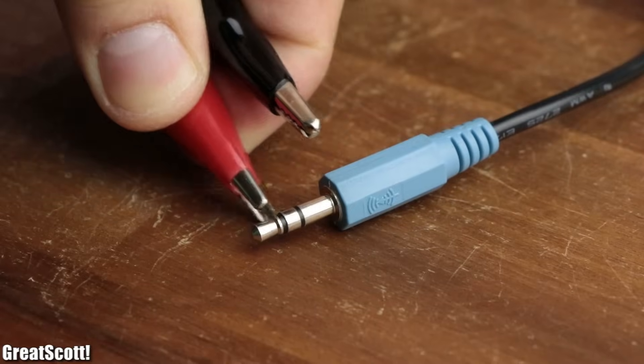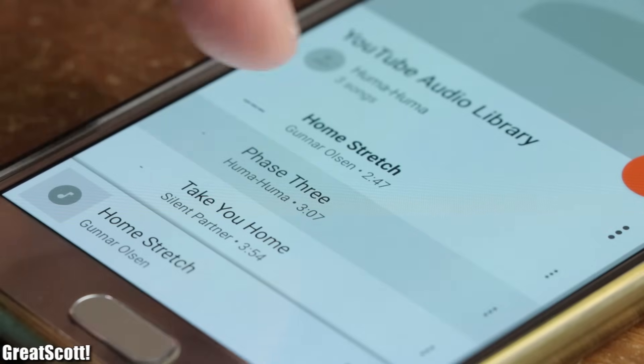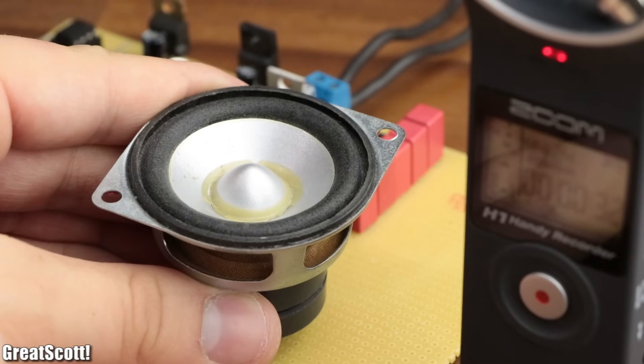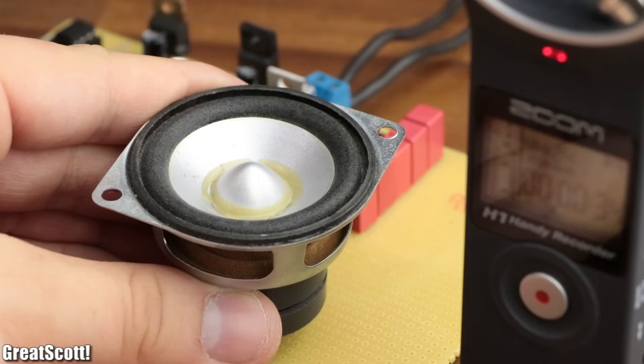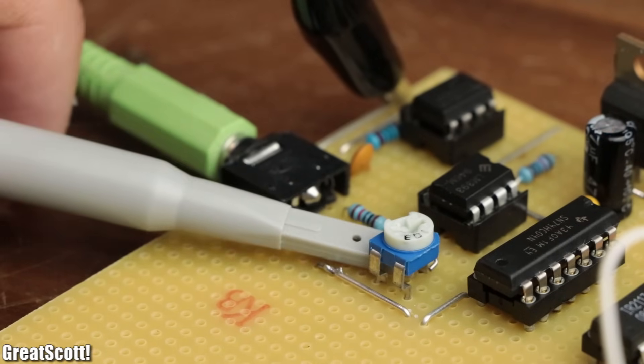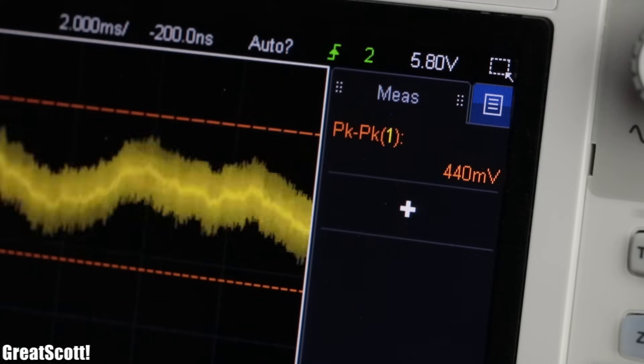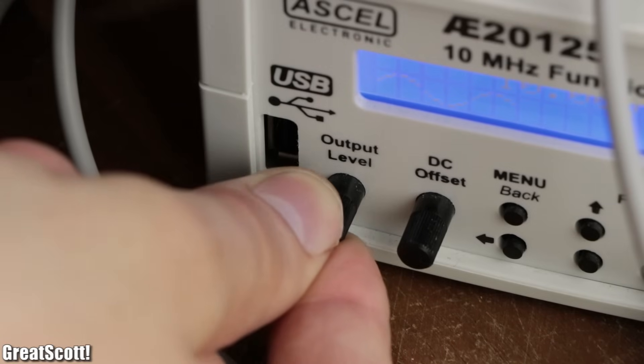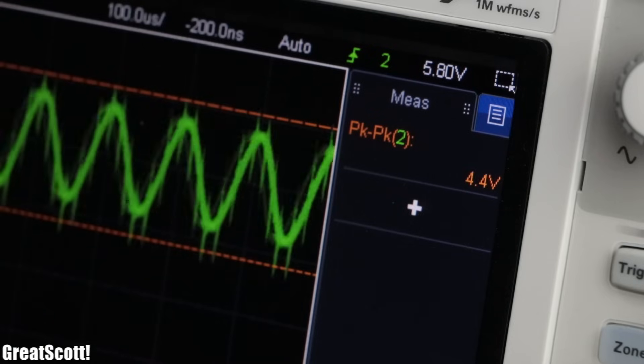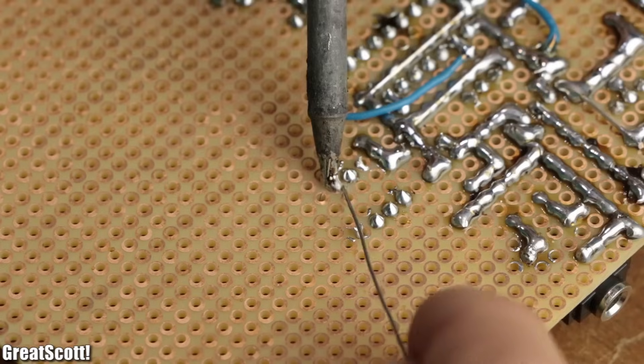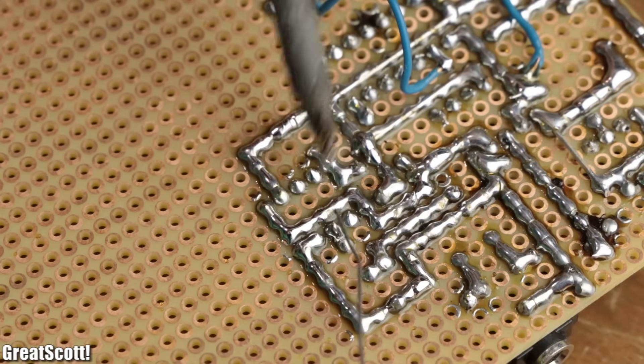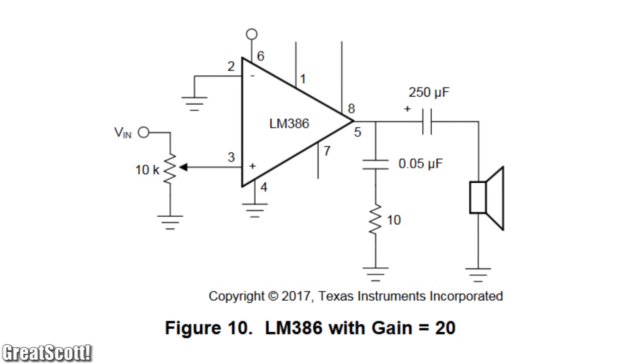So I replaced the function generator with my smartphone and tested the music playback capabilities of the amp. As you can hear, the music playback also worked like a charm, but the volume was a bit low. The reason for that was that the music signal only features a peak-to-peak voltage of around half a volt, while the function generator easily created peak-to-peak voltages of 4 volts. So as an afterthought, I added an LM386 op amp in between the input audio signal and the comparator, which didn't even require complementary components.